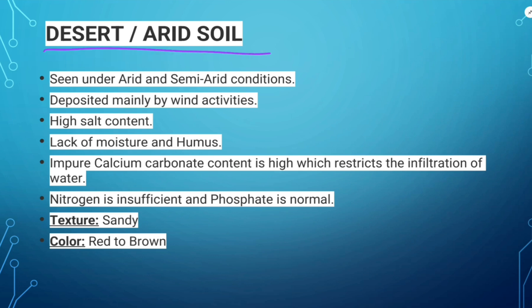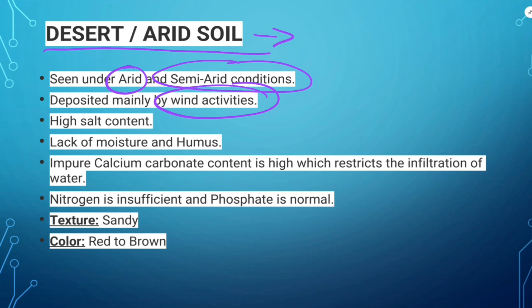Desert soil is found under arid and semi-arid conditions, mainly deposited by wind activities. In deserts, weathering of rocks takes place due to heating during the day and cooling during the night. This type of soil is mainly composed of sand grains with little or no humus. It contains high salt content and lacks moisture and humus, with less capacity to hold moisture.